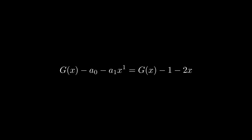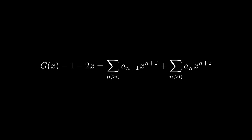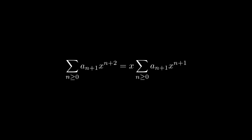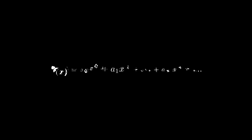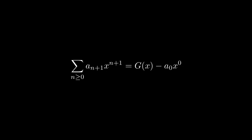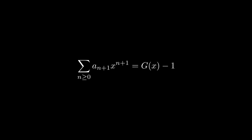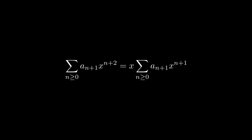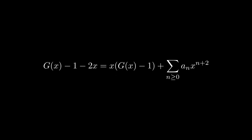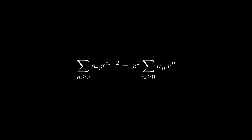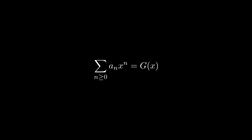Now we can substitute in the values for a_0 and a_1 and rewrite the left side in terms of the generating function. The rest should look pretty similar. Let's grab the first term on the right side and factor out an x, giving us a summation that starts at n+1, so the first term is a_1 times x. We can write it as the generating function minus a_0 times x to the 0, substitute in the value for a_0, and leave it in factored form. Lastly, we factor x squared out of the last summation on the right side, which is simply the generating function, and rewrite it in the equation.